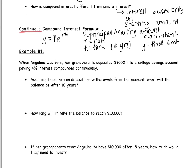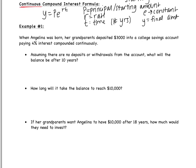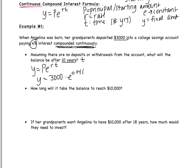Let's look at example one. When Angelina was born, her grandparents deposited $3,000 into a college savings account paying 4% interest compounded continuously. The phrase 'compounded continuously' tells me to use this formula. The first question: assuming no deposits or withdrawals, what will the balance be after 10 years? Ten years is my T. So I have Y equals P times E to the RT.